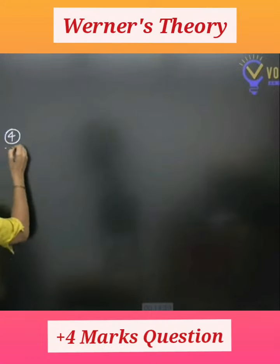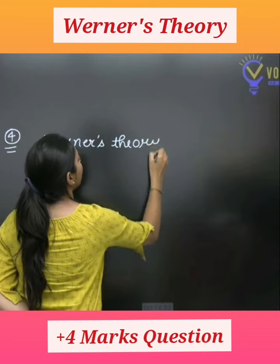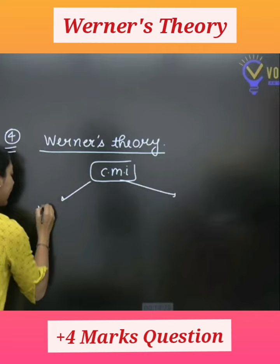In today's fourth important topic, it's called Werner's theory. Werner's theory says that in any complex, the central metal ion shows two kinds of valency: one is primary valency, and the other is secondary valency.